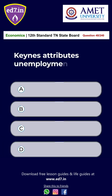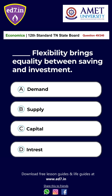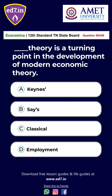Question 48: Keynes attributes unemployment to — A. A lack of effective supply, B. A lack of effective demand, C. A lack of both, D. None of the above. The answer is Option B: Lack of effective demand. Question 49: Dash flexibility brings equality between savings and investment. A. Demand, B. Supply, C. Capital, D. Interest. The answer is Option D: Interest. Question 50: Dash theory is a turning point in the development of modern economic theory. A. Keynes, B. Say's, C. Classical, D. Employment. The answer is Option A: Keynes.